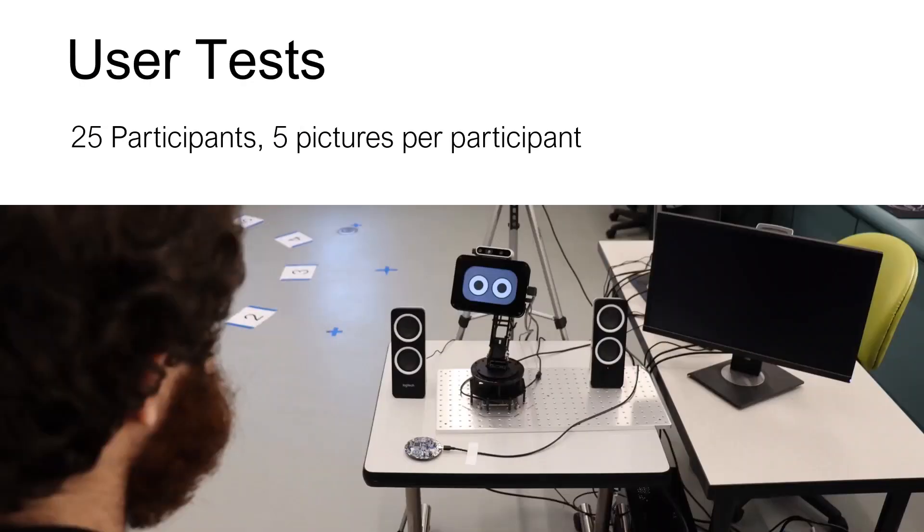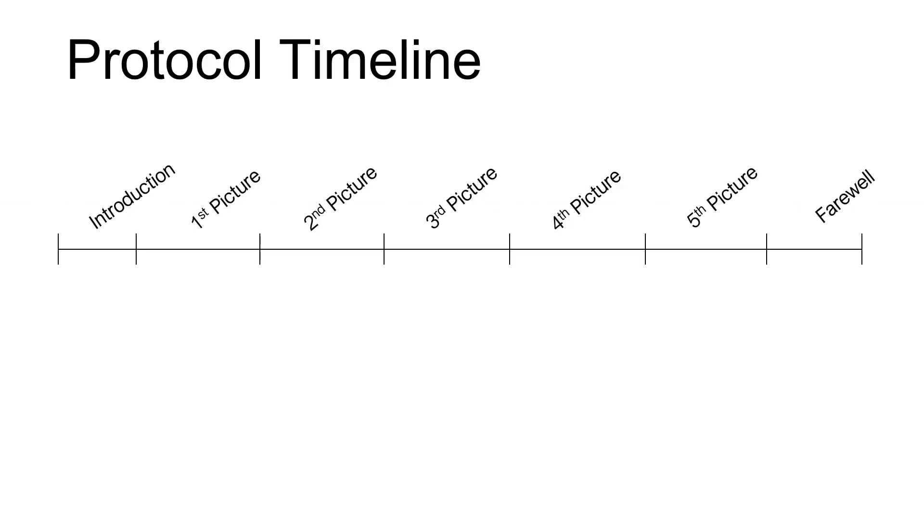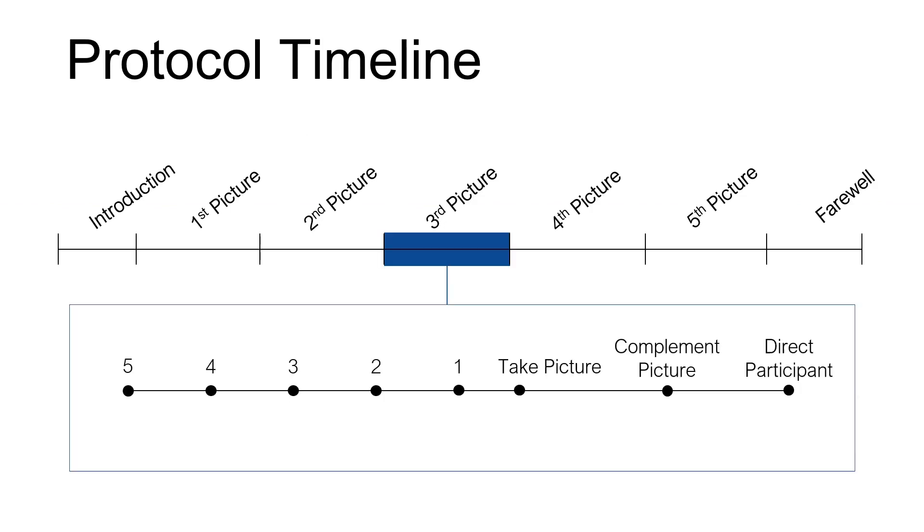After making these modifications, we conducted user tests, in which we had 25 participants come into the lab to have their picture taken by Shedder. Shedder began the interaction with an introduction, asking the user if he or she would like to be photographed. It then proceeded to take five pictures, with humor's content being delivered in all the pictures but the first. In each picture event with humor, Shedder provided additional content during the countdown, right after the numbers 5, 3, and 1. This content was either one of the four humor types described before, or a no humor option. Following the countdown, Shedder took the picture, complimented the photo taken, and then directed the participant on where to stand next.